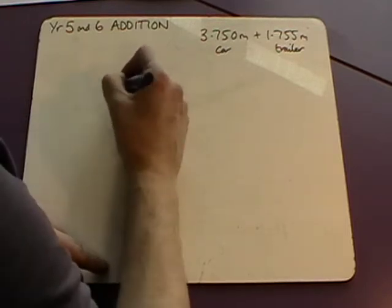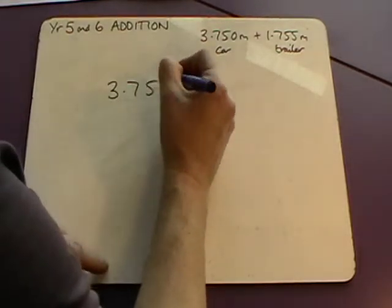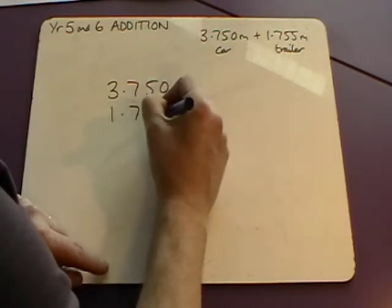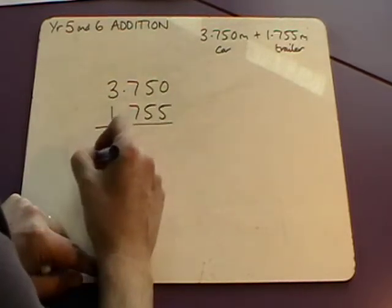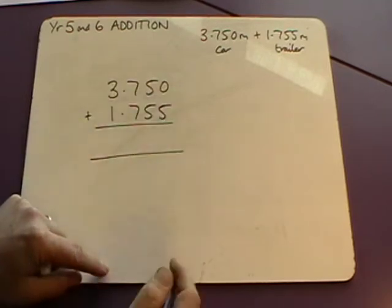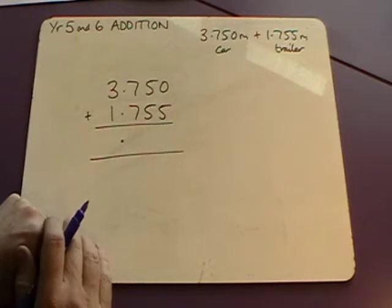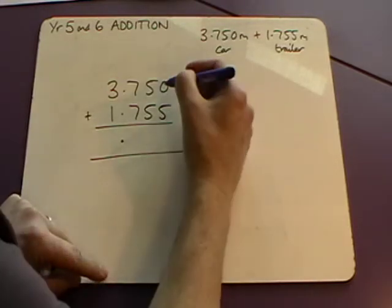So 3.750 added to 1.755 metres. Draw our lines, draw our addition symbol. I would put the decimal point in before I start so it's not forgotten at the end.